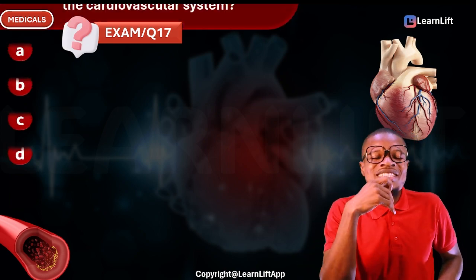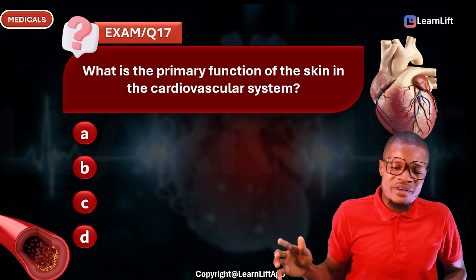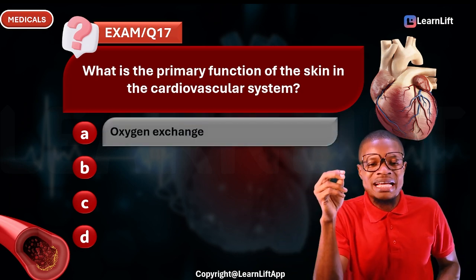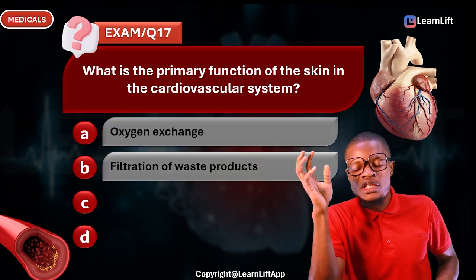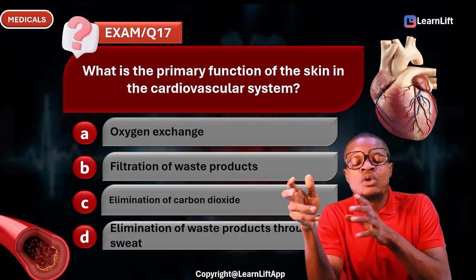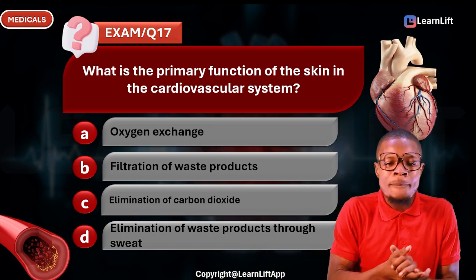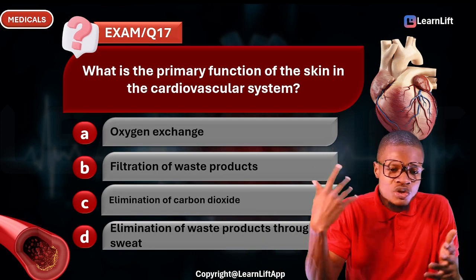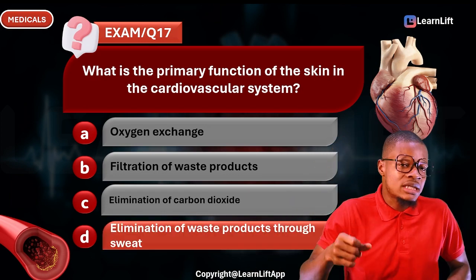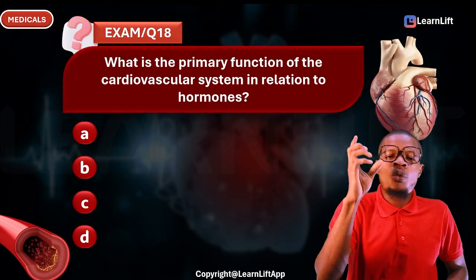Question seventeen: What is the primary function of the skin in the cardiovascular system? Option A: oxygen exchange. Option B: filtration of waste products. Option C: elimination of carbon dioxide. Option D: elimination of waste products through sweat. The correct answer is Option D — elimination of waste products through sweat.